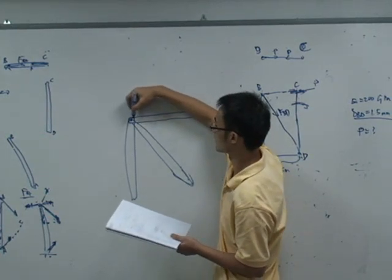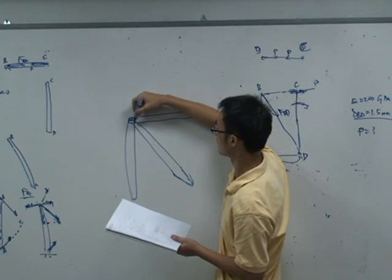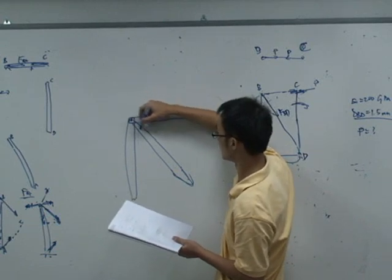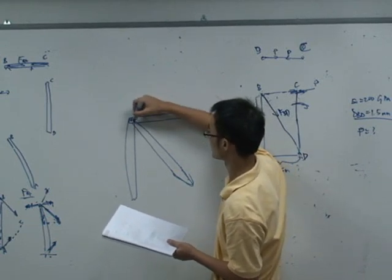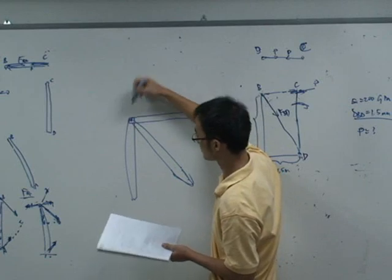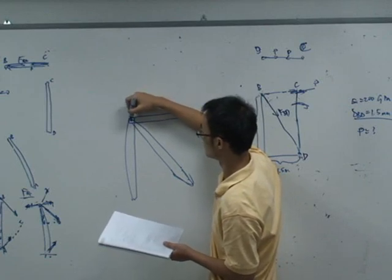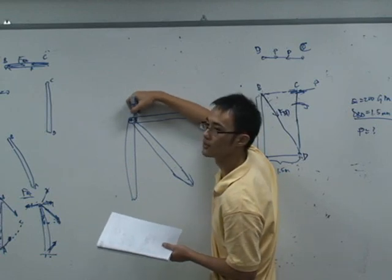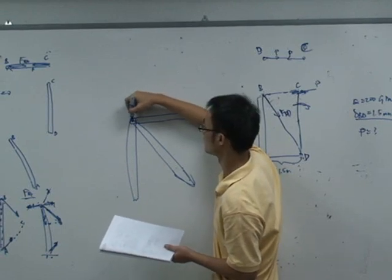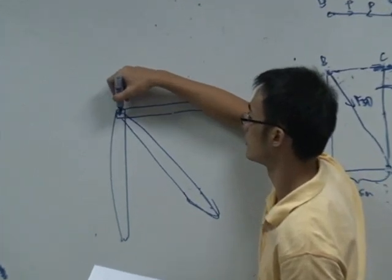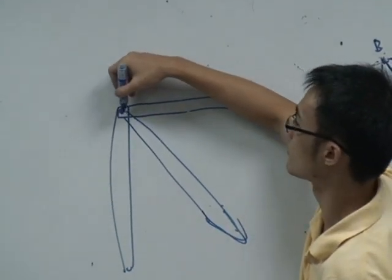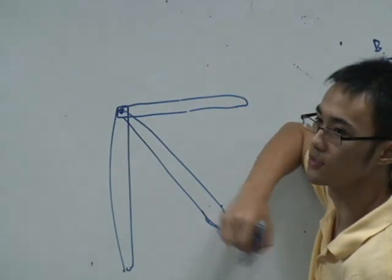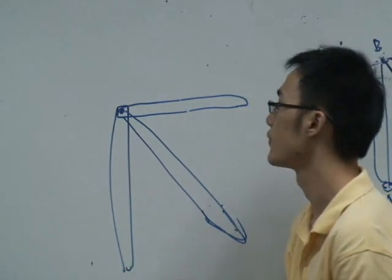Now, instead of you consider this bar have a force on this member and this bar have a force on this member, you can just simply consider this. This joint has a force on this member as the force on a joint.